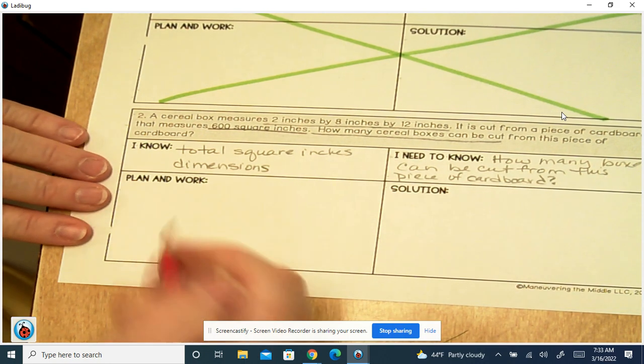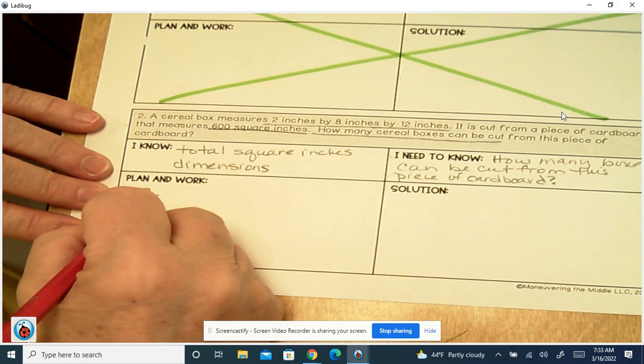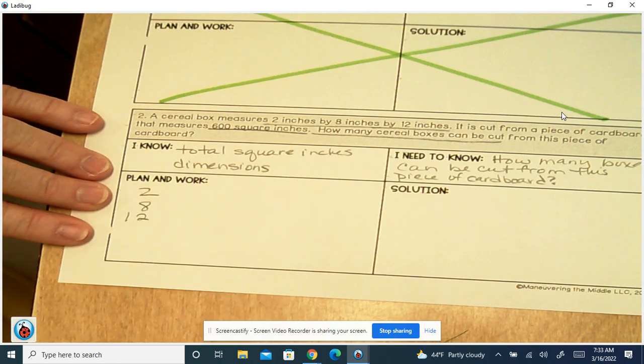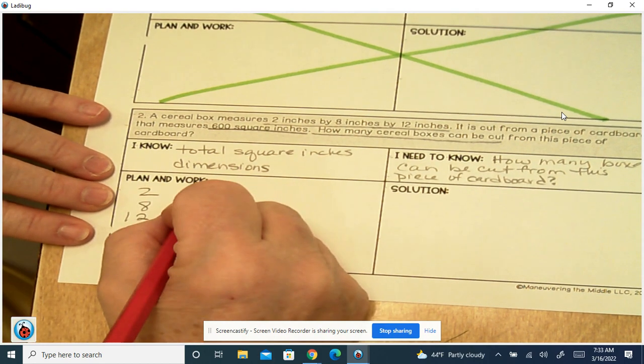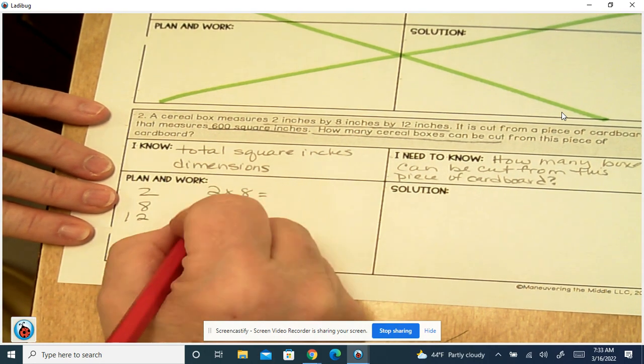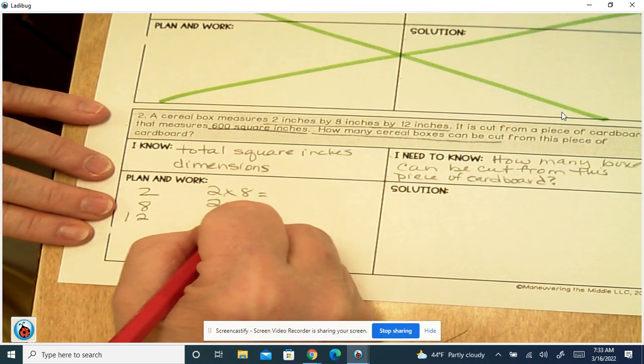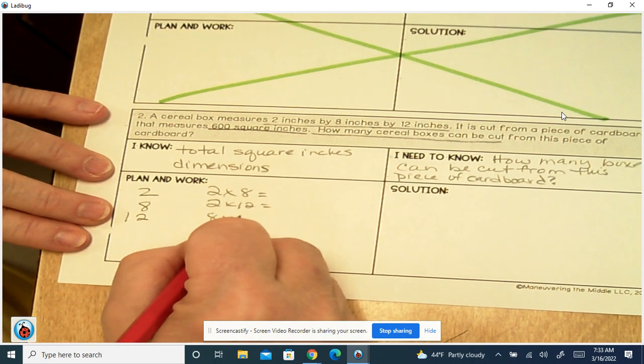Alright, so we've got our dimensions: 2, 8, and 12. So remember your combinations. 2 times 8, 2 times 12, 8 times 12.